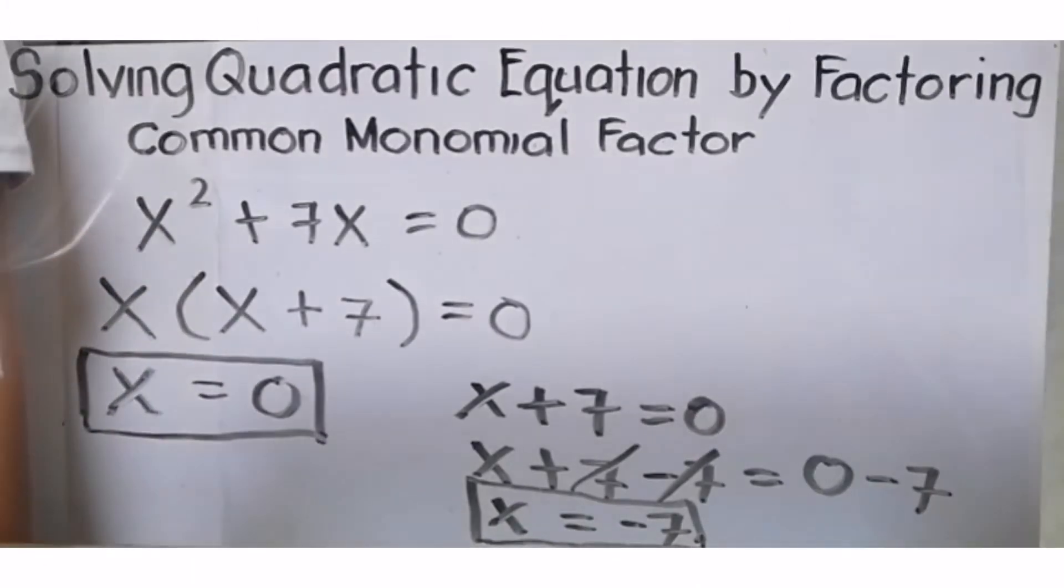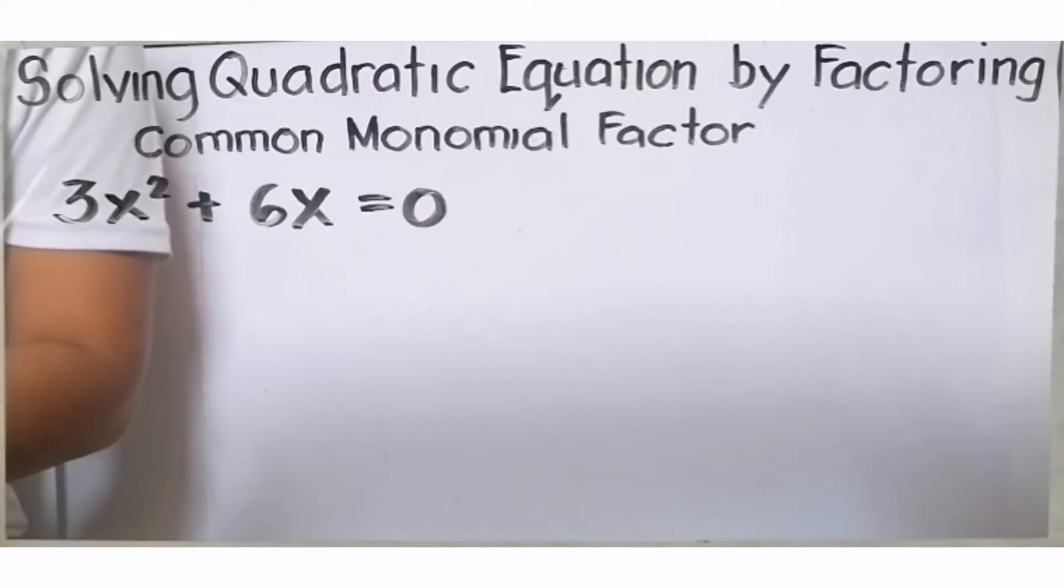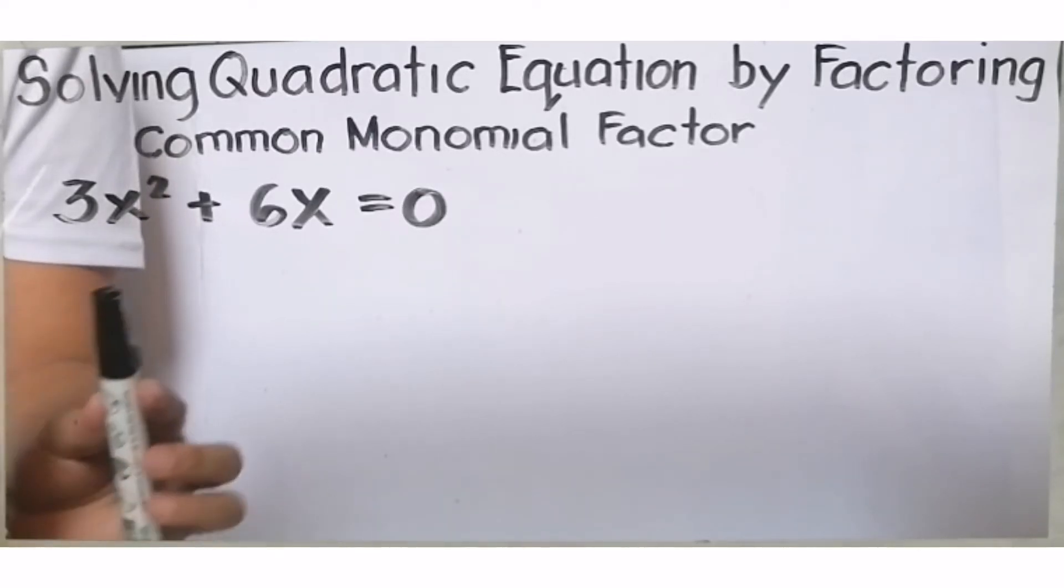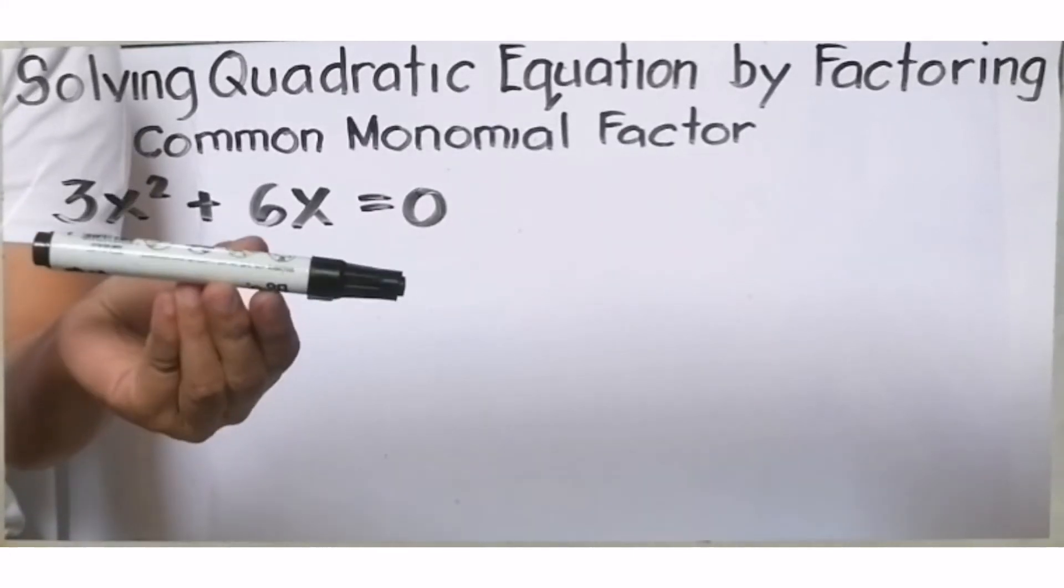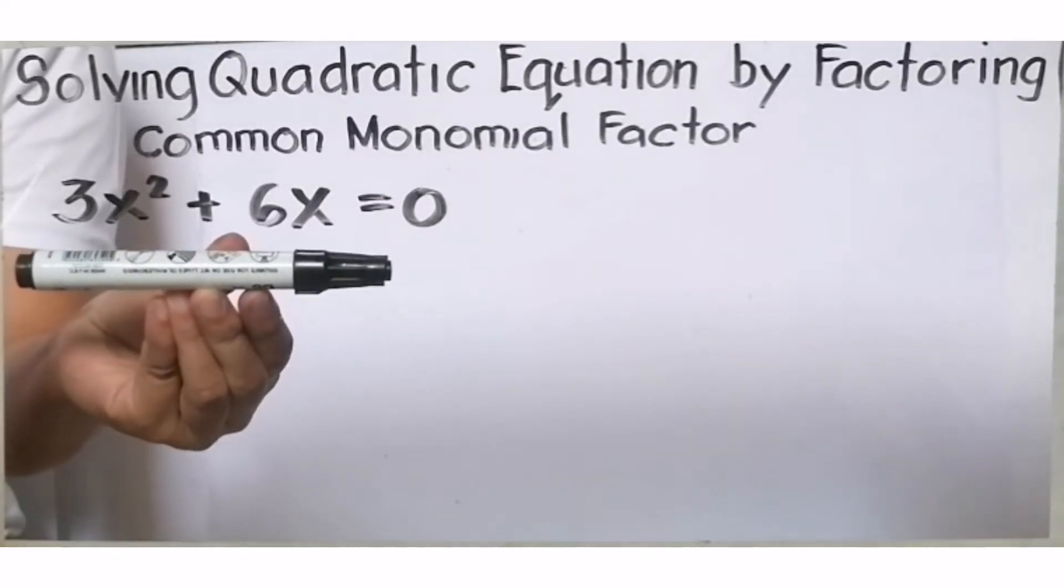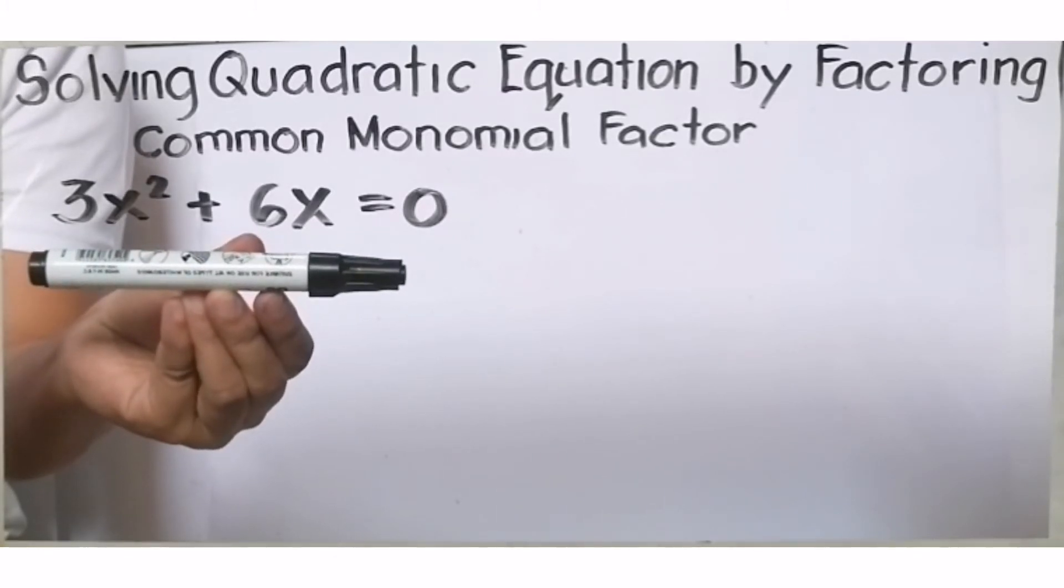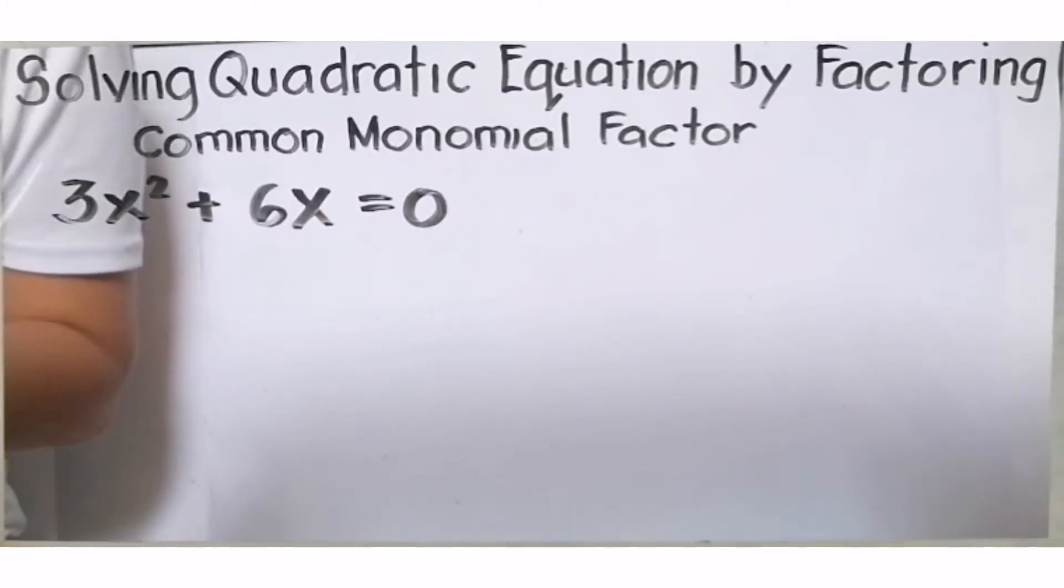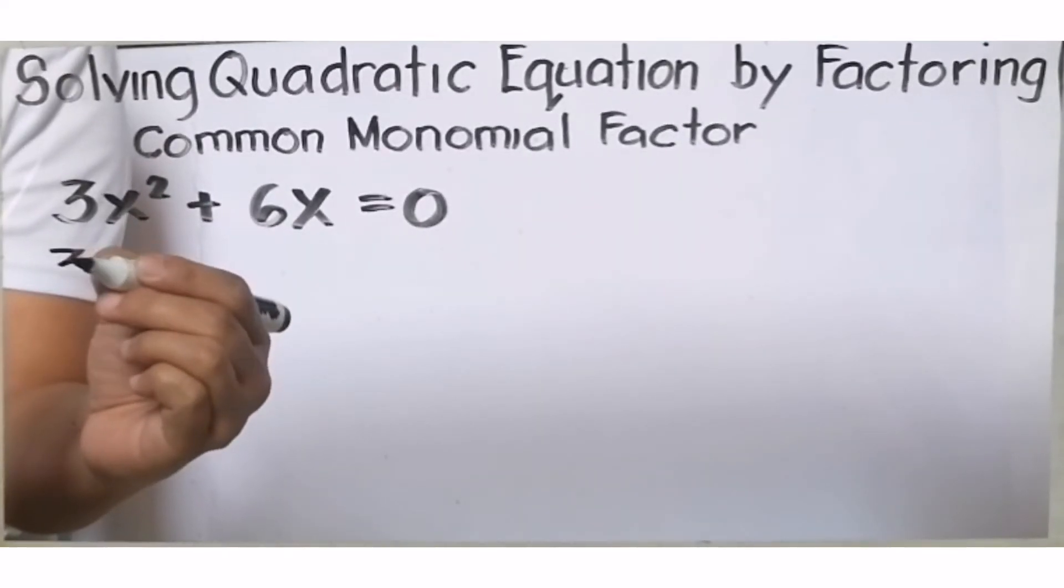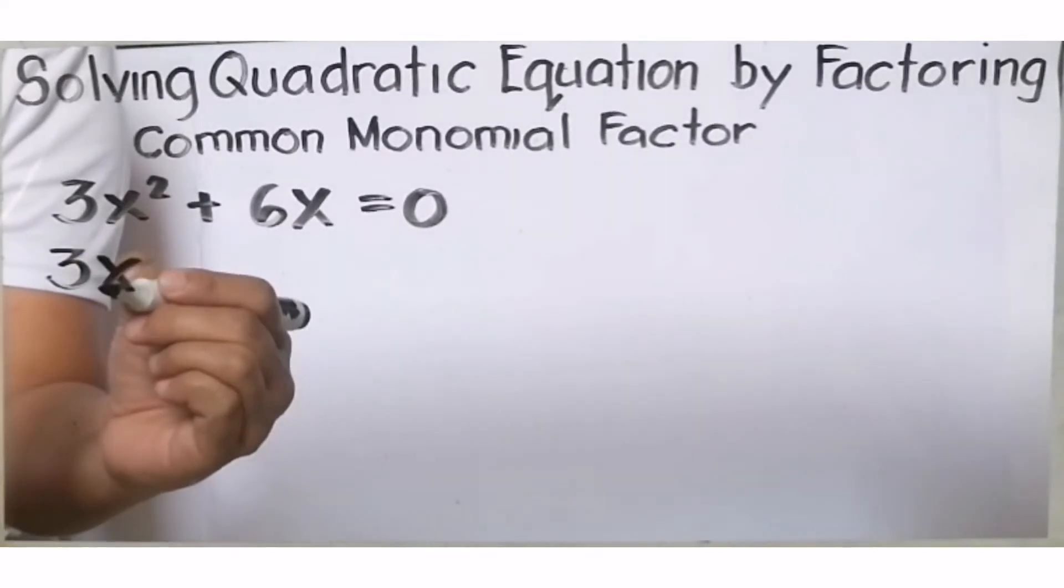Ibig sabihin, x² + 7x has the solutions x = 0 and x = -7. Paano naman kung ang given ay 3x² + 6x = 0? Tingnan natin maigi. Ano ba ang common factor ni 3x² at ni 6x? Both are divisible by 3 and both are divisible by x. Ibig sabihin, ang isang factor natin dito ay 3x.